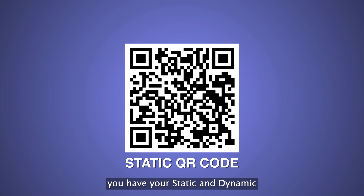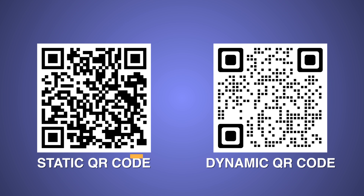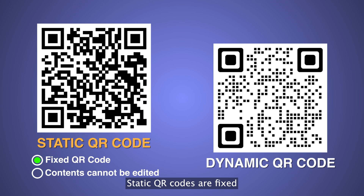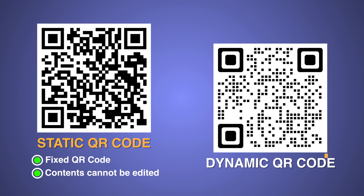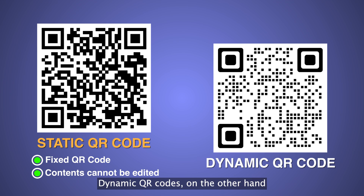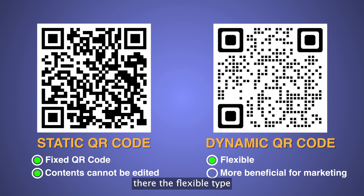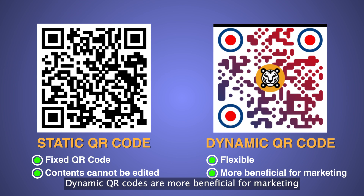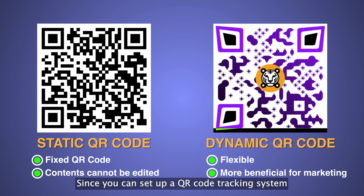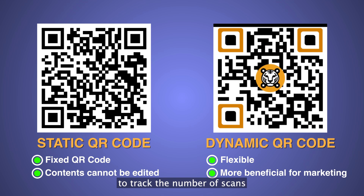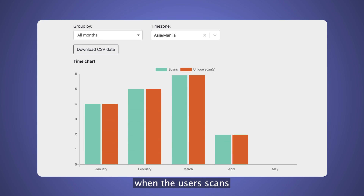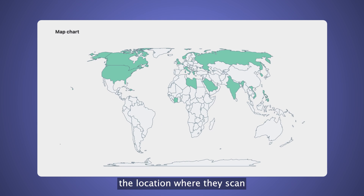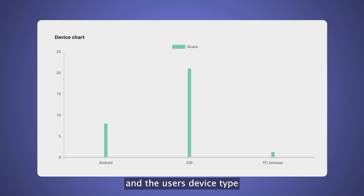And there's two types of QR codes — static and dynamic. Static QR codes are fixed and their contents cannot be edited. Dynamic QR codes, on the other hand, are the flexible type. They're more beneficial for marketing since you can set up a QR code tracking system to track the number of scans, when the user scans, the location where they scan it, and the user's device type.